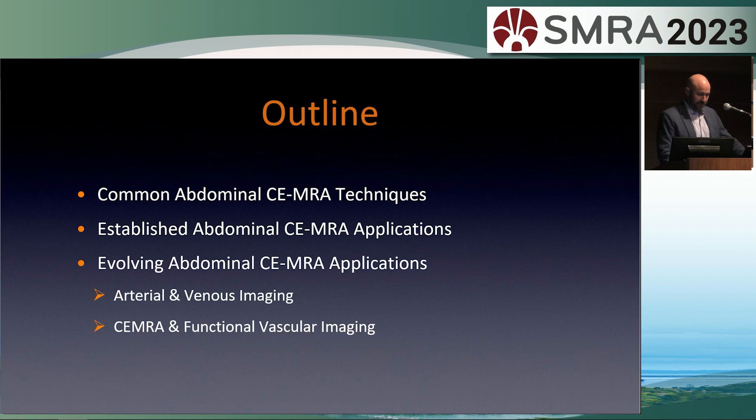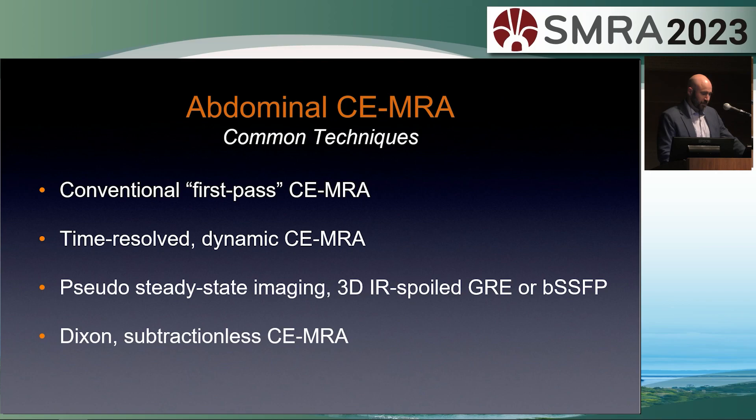The outline will cover some common abdominal contrast-enhanced MRA techniques, review established applications, talk about evolving applications, and get into some functional vascular imaging with MR. The common techniques include conventional first-pass imaging, time-resolved dynamic contrast-enhanced MRA, pseudo-steady-state imaging, and subtractionless contrast-enhanced MRA using the Dixon methods.